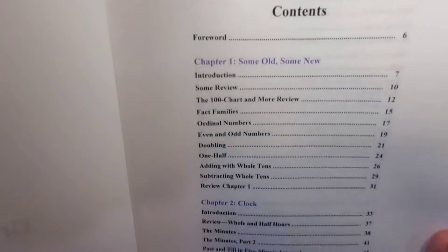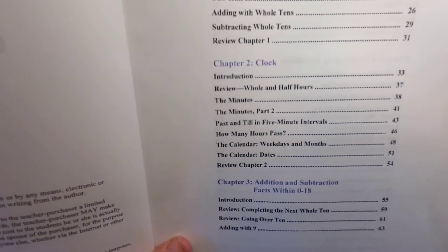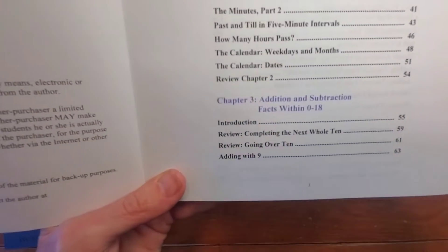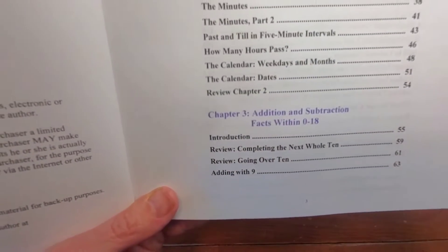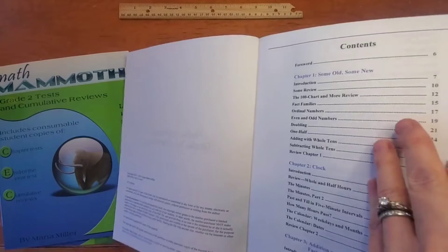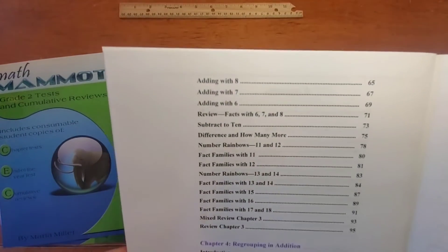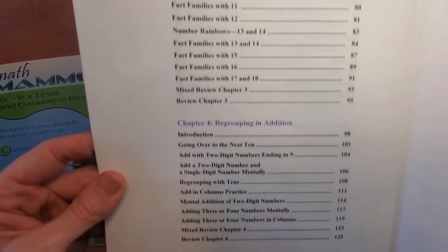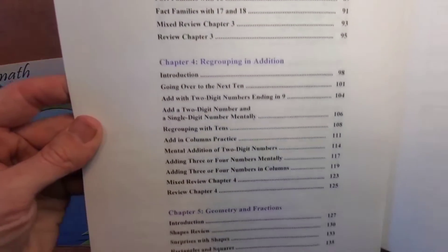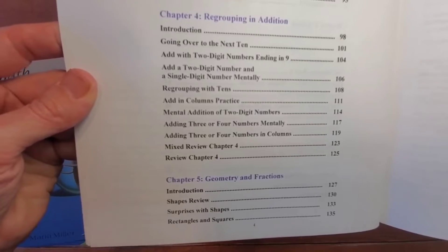Chapter one is some old and new, a little bit of review in there. Time, clock, addition and subtraction facts within zero to 18, regrouping in addition, geometry and fractions.